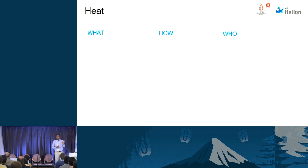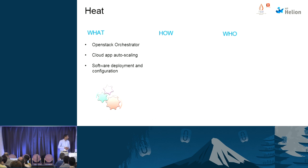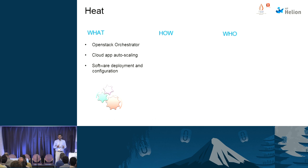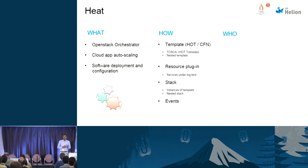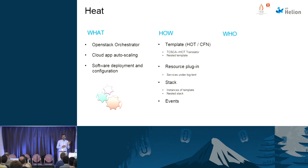Auto scaling is mainly provided by Heat. Let us talk a little about Heat before getting into auto scaling. Heat is the OpenStack orchestrator - like AWS has CloudFormation, similarly OpenStack has Heat. In addition, Heat provides features for auto scaling and software deployment and configuration. It provides a template mechanism: you can declare a cloud application in textual form by means of a template. Heat provides support for HOT and CFN formats. We also provide a template translator that translates a TOSCA model into a HOT template.